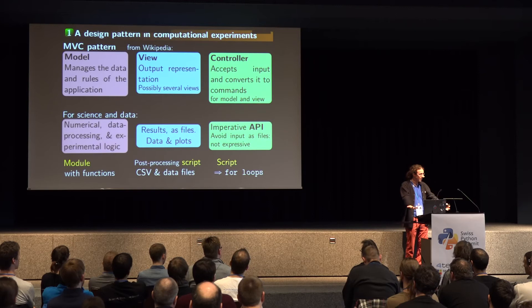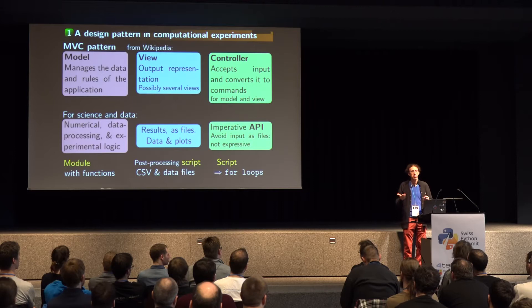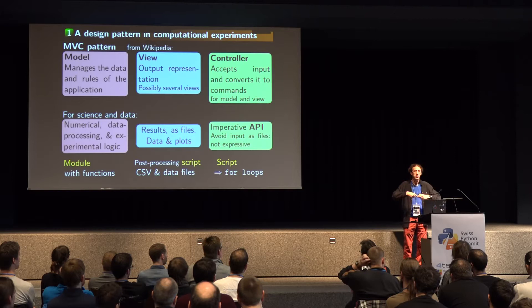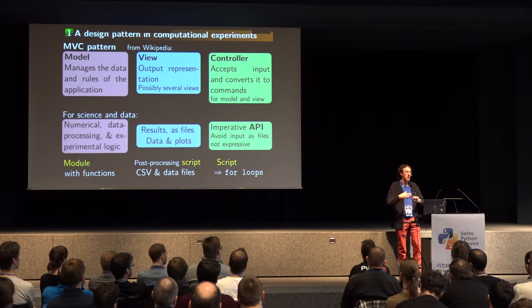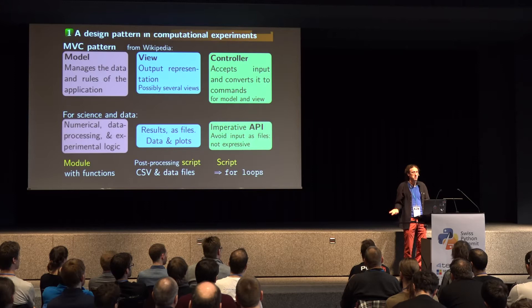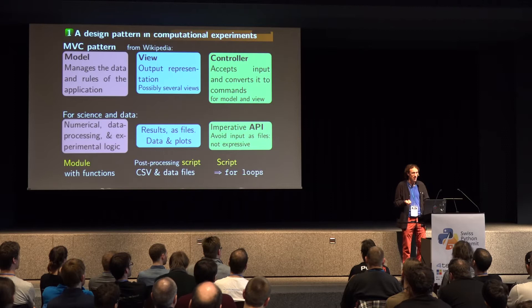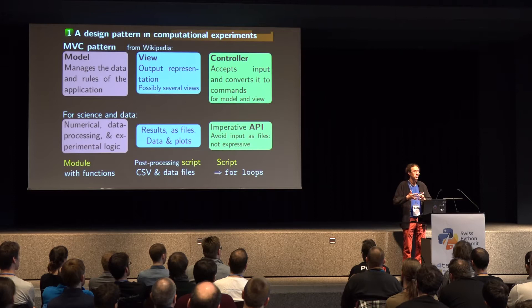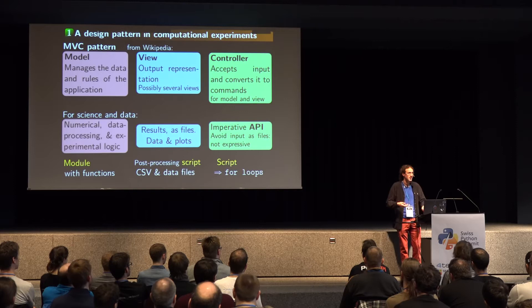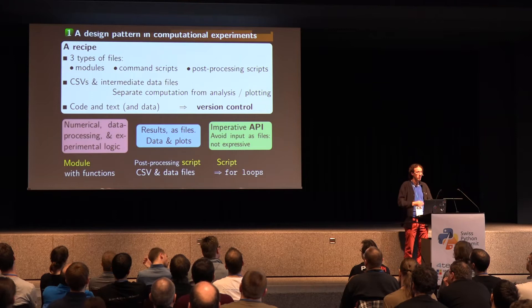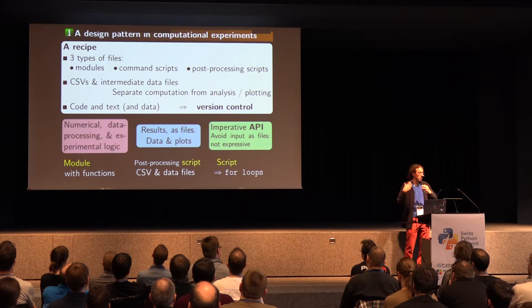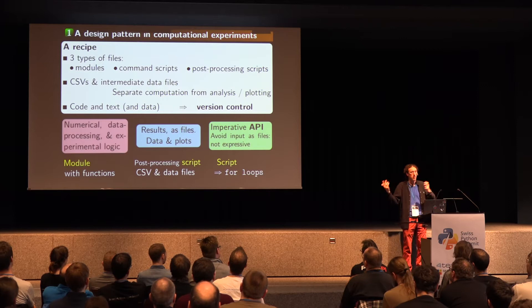People in scientific computing would come up with crazy configuration files describing what the experiment is. There's a joke that any major scientific computing project eventually ends up reinventing a subset of Lisp to describe the experiment. But we've got Python, which is imperative. So my controller is basically a Python script — harder to analyze, but more powerful. My recipe is three types of files: modules with reusable code, command scripts that control modules to run everything, and post-processing scripts that go from the intermediate representation to pretty pictures for papers or the boss.